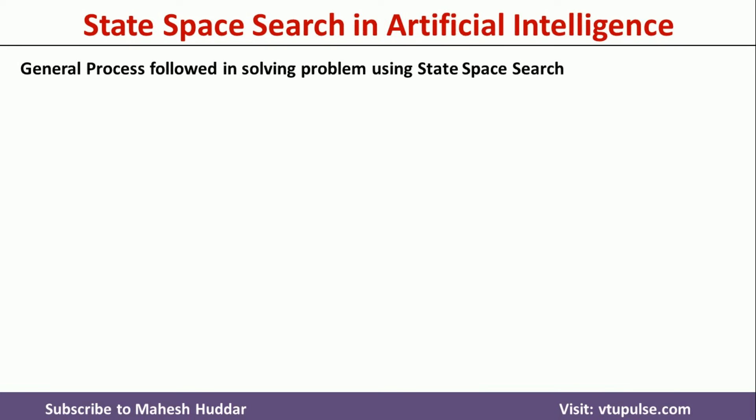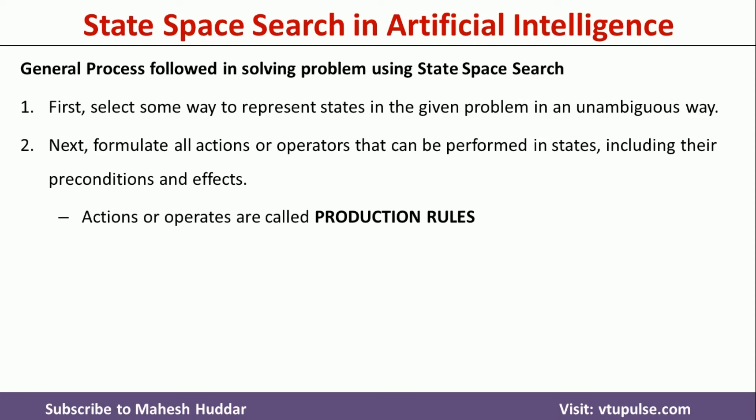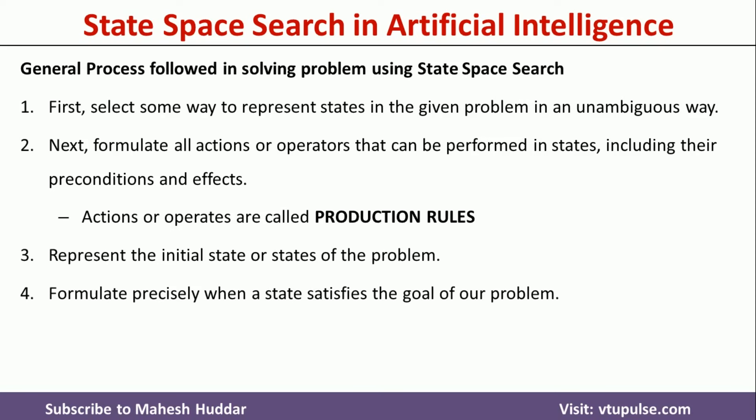Now, coming to the general process to be followed in solving a problem using state space search. The first step is to represent the problem in a state space in an unambiguous way — as we did in the maze and 15-puzzle examples. The second step is to define all possible actions or operators so we can move from one state to another; these actions or operators are called production rules. Once you represent the problem and identify the rules, you need to represent the problem's initial state and formulate precisely when a state satisfies the goal.